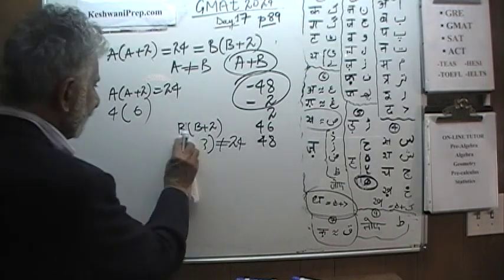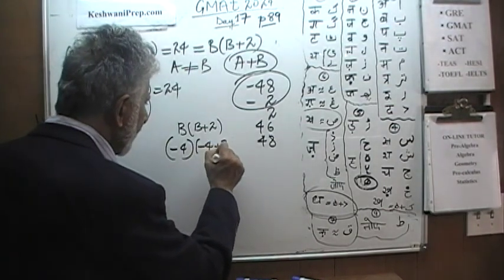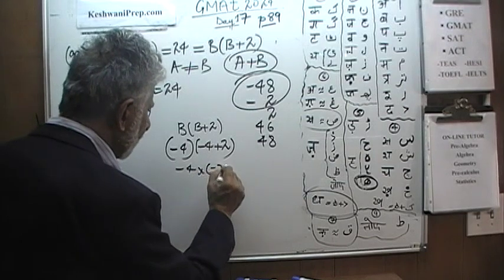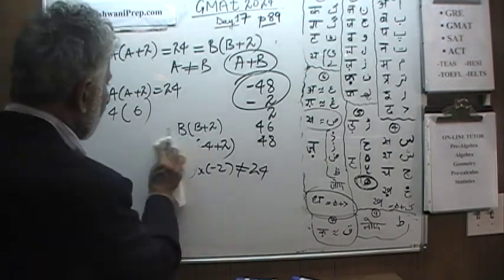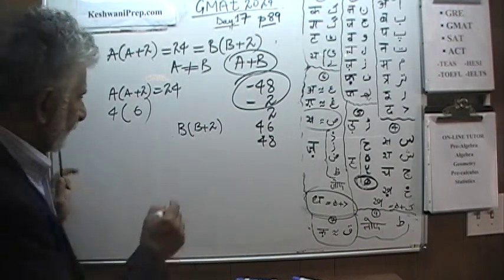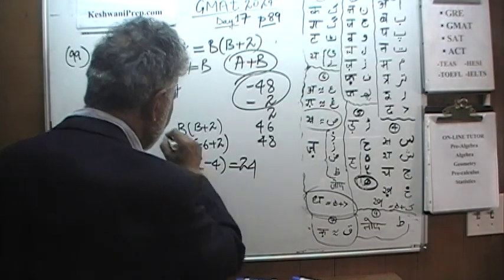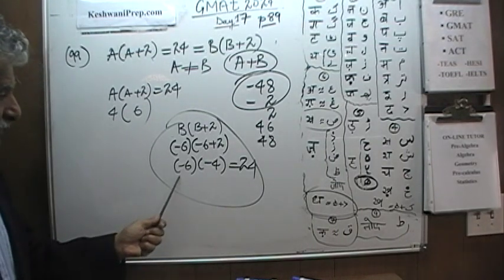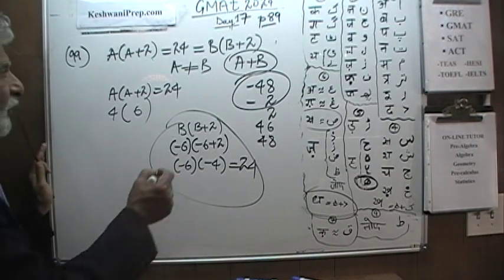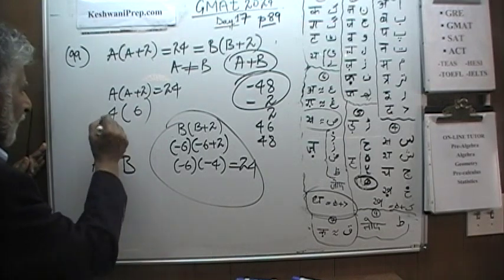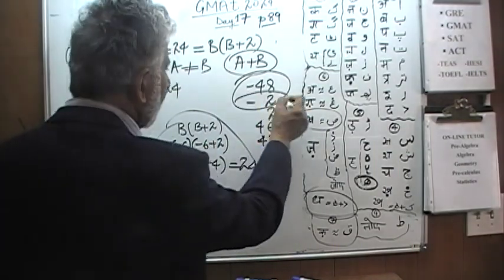Let's try something negative. We had A equal to 4. Why don't we make B equal to negative 6? Negative 6 times (negative 6 plus 2) gives us negative 6 times negative 4, which is positive 24. That works! So B is negative 6. We are looking for A plus B: A is positive 4, B is negative 6, and therefore their sum is negative 2. The answer is B.